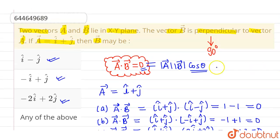But since this is a single choice answer, the correct option will be option four which is any of the above vector. Above given vectors, all of these are perpendicular to A vector. So the correct option is any of the above. I hope you understood. Thank you.